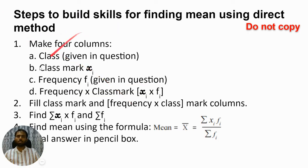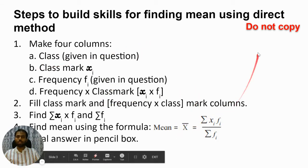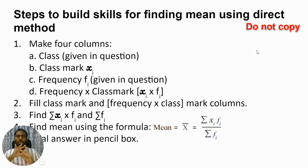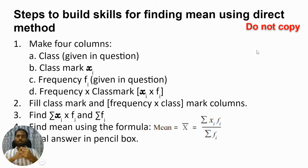These were the steps to build skills for finding mean. The methods are: first is direct method, second is step deviation method, and third is assumed mean method. However, step deviation method and assumed mean method have been omitted from the syllabus due to the lockdown, so you only have to learn the direct method.